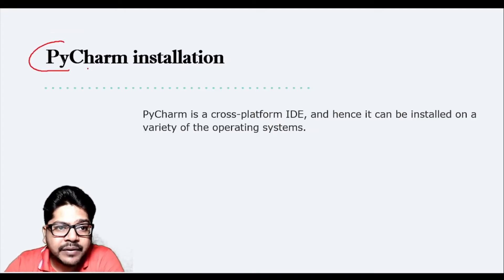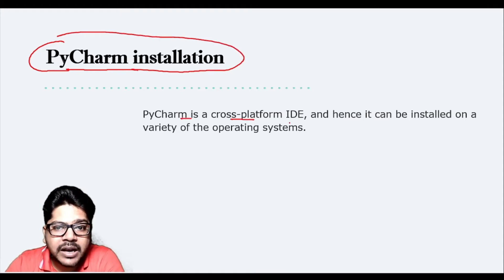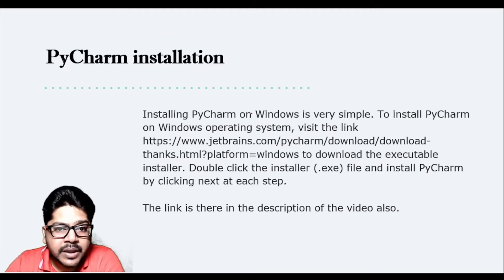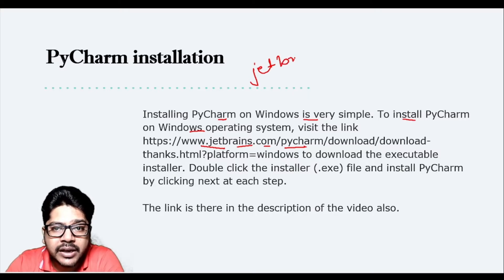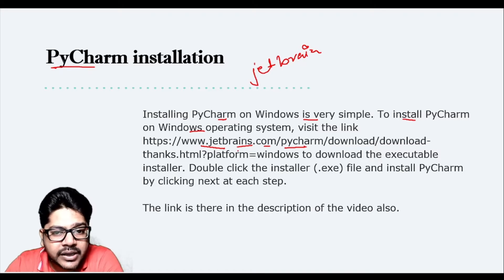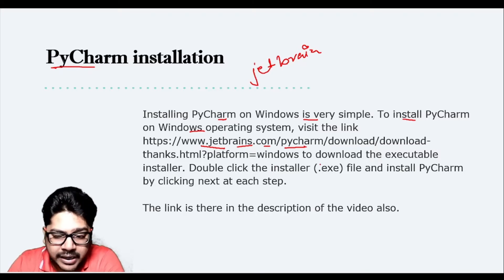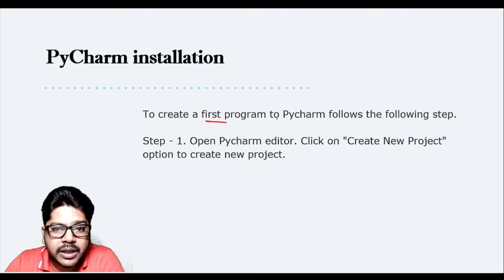Now let's talk about PyCharm installation. PyCharm is a cross-platform IDE that can be installed on a variety of operating systems. To install it on Windows, go to www.jetbrains.com/pycharm, or simply search 'PyCharm download' on Google and follow the link.